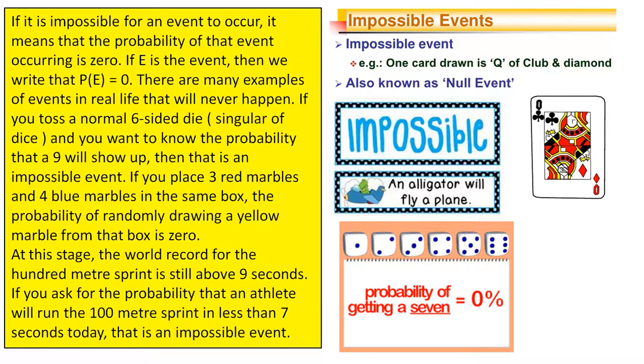If you place three red marbles and four blue marbles in the same box, the probability of randomly drawing a yellow marble from that box is zero.